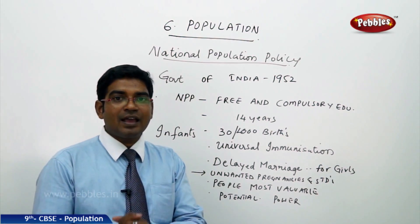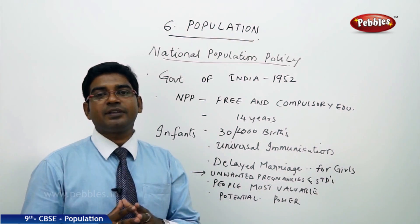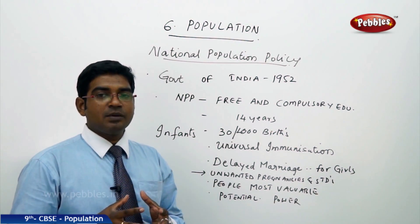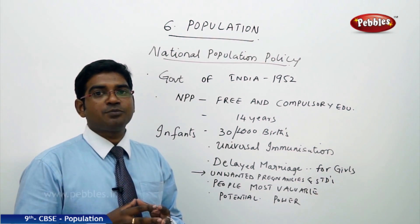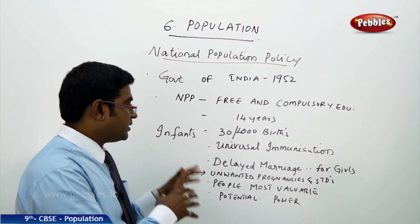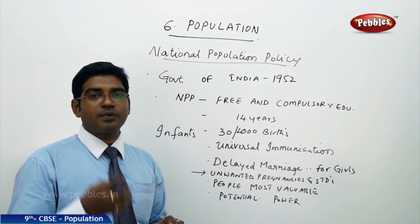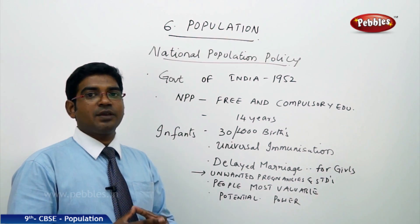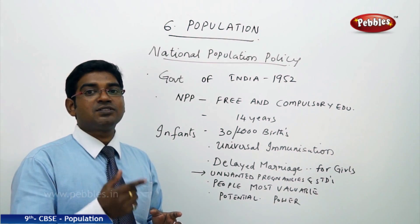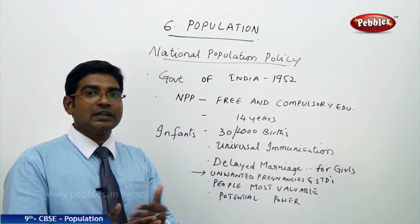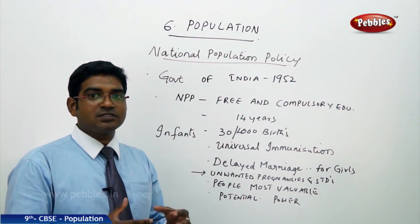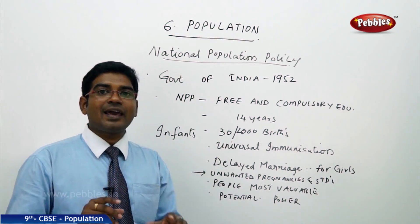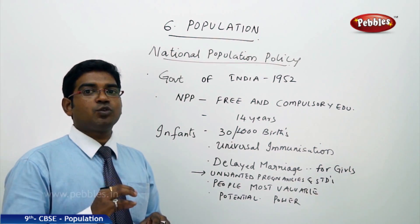Among the key provisions of the National Population Policy are: free and compulsory education for children up to 14 years of age, which creates awareness of their rights and duties; reducing the infant mortality rate from 30 per thousand births to a very low level; attaining universal immunization through polio and smallpox campaigns for a healthy society. The policy also targeted girls being married during adolescence — marriage for girls must be delayed so they acquire physical fitness before bearing children.